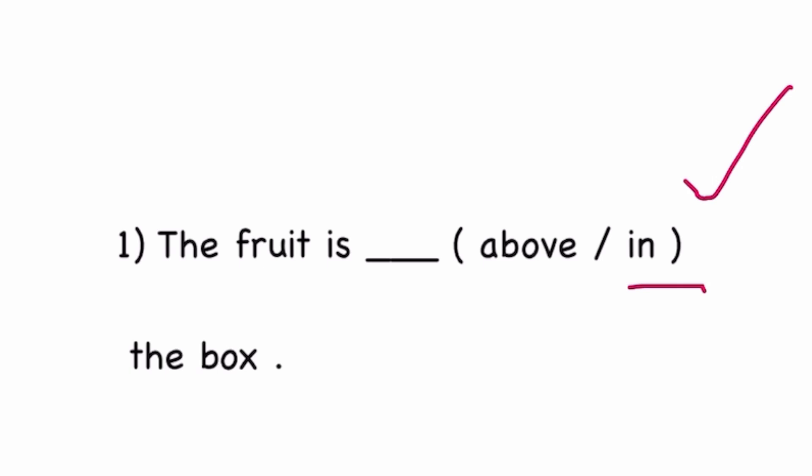So here we go with the very first sentence: the fruit is above or in the box? Which is the correct answer? The correct preposition is in, in the box. So when do we use in? When something is enclosed. When we want to convey that something is inside, then we use the preposition in.